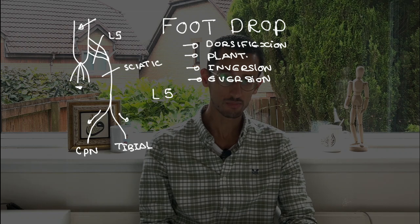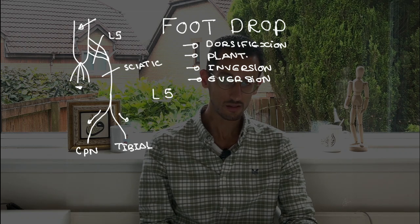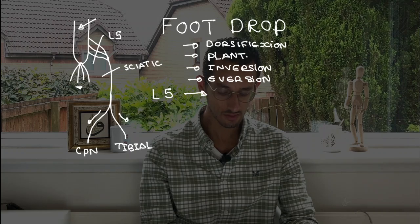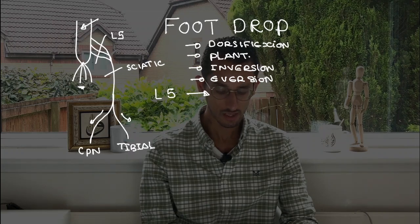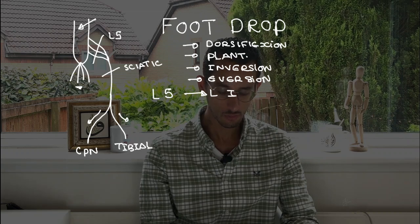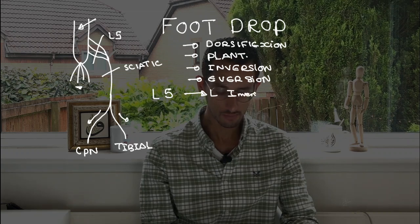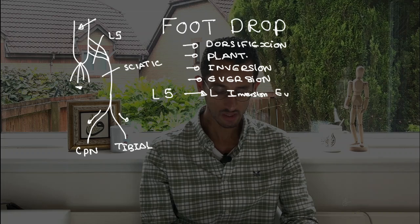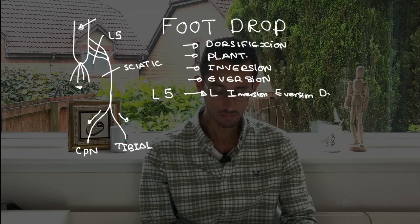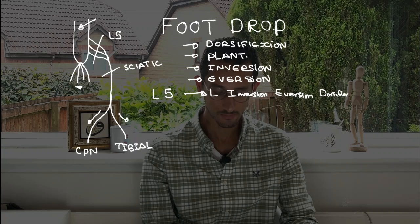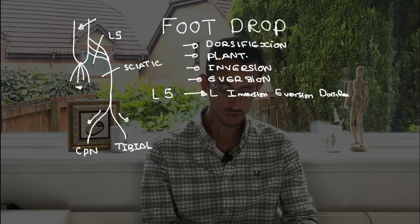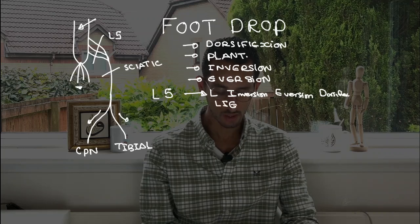We'll talk first about the L5 nerve root, and the easiest way to remember this one is a mnemonic which helps you to remember - which is LIED, which means the L will be L5, and then the I would be inversion, and the E would be eversion, and the D would be dorsiflexion. So that would be the function of the L5 nerve root, all summarized in the word LIED.